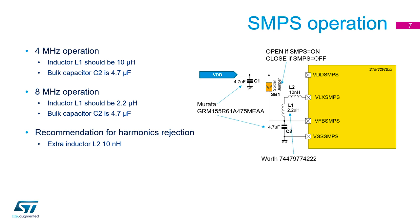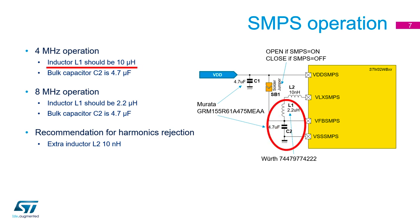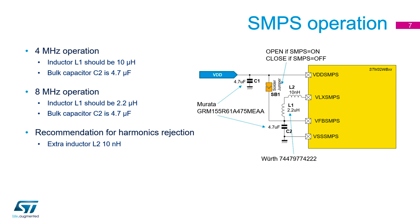The STN32WB incorporates switch mode power supply operation. There are several requirements for components and their way of use. If you use this SMPS function you have to care about right selection of components and their correct placement. We will focus on layout in detail in the second part of this video. The inductor L1 should be selected as 10 µH associated with a bulk capacitor of 4.7 µF for 4 MHz operation. If you choose 8 MHz operation then the inductor L1 should be selected as 2.2 µH, while the bulk capacitor of 4.7 µF remains the same.